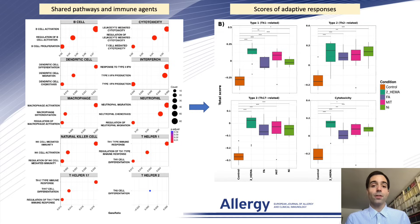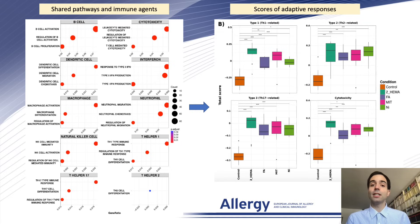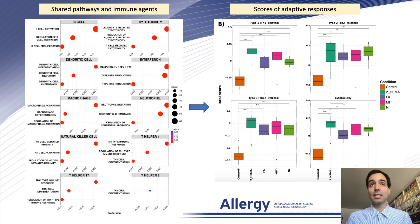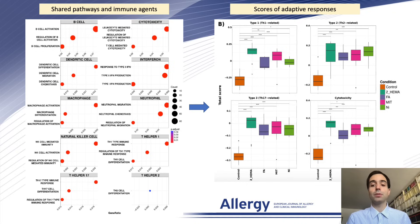Furthermore, a myriad of adaptive responses could be found, including not only type 1 and cytotoxicity responses but also type 3 and type 2 responses.